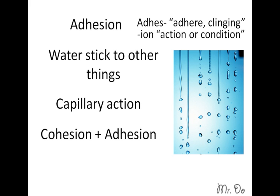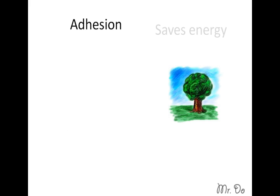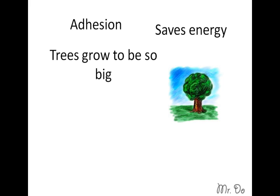So cohesion with adhesion is very important. It helps, for example, capillary action water up the roots of trees. And that is important because it saves the tree a lot of energy.